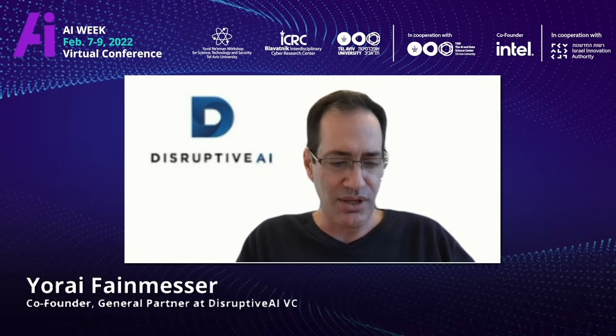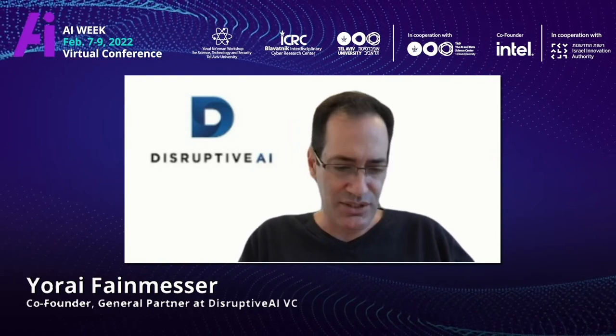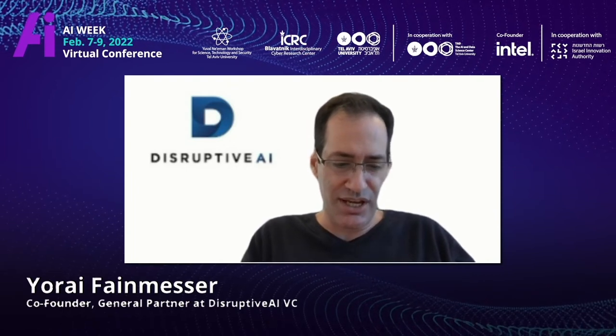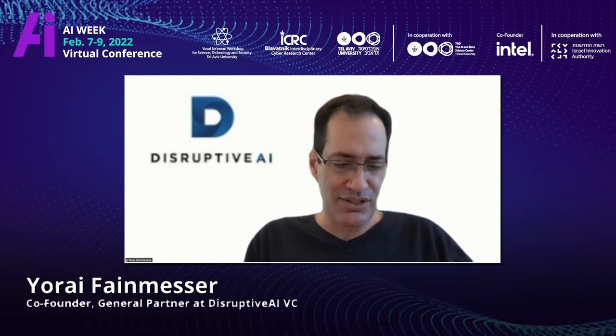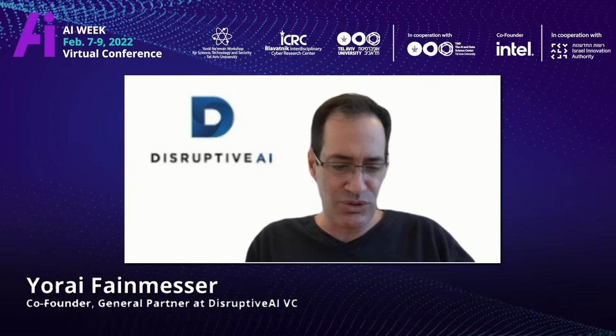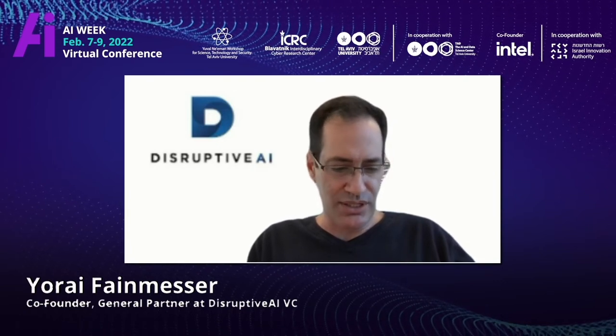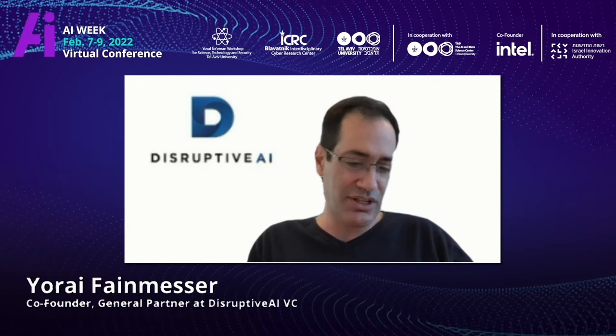I'm very pleased to introduce the first speaker, Professor Shimon Ullman from the Weizmann Institute of Science. He is the head of the AI Center and Professor at the Brain Cognitive Science and AI Laboratory at MIT. His research combines computer and human vision, human cognition, and brain modeling. He obtained his BSc in mathematics, physics, and biology at the Hebrew University, and his PhD in electrical engineering, computer science, and artificial intelligence at MIT.